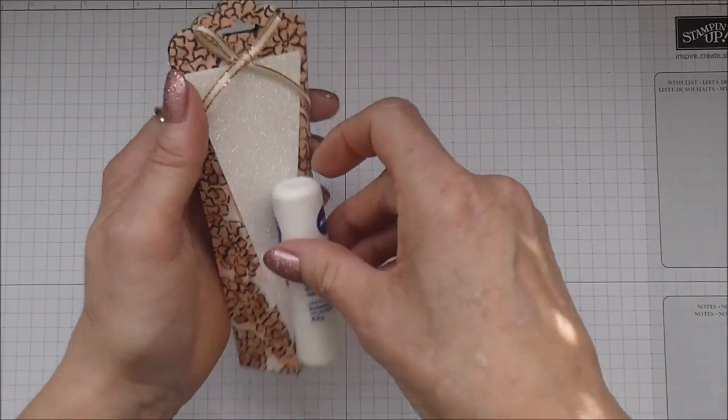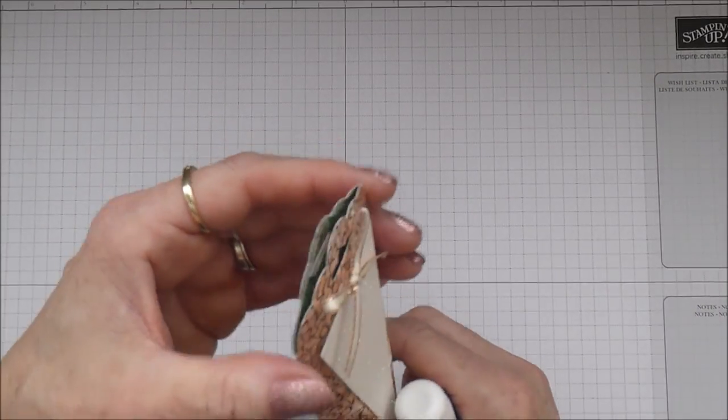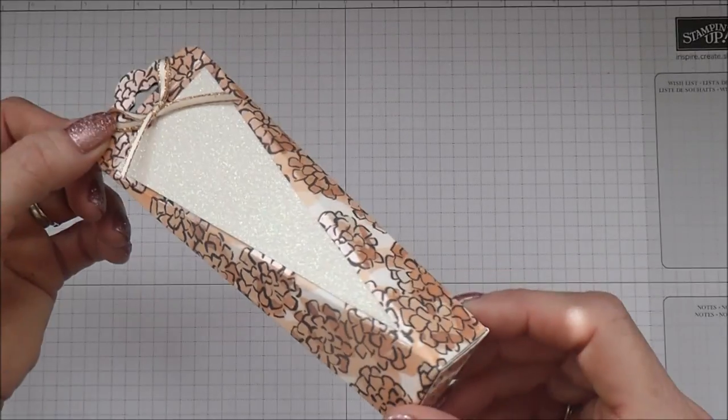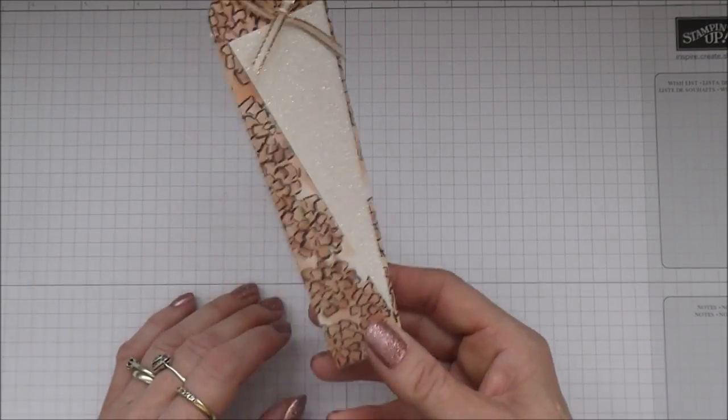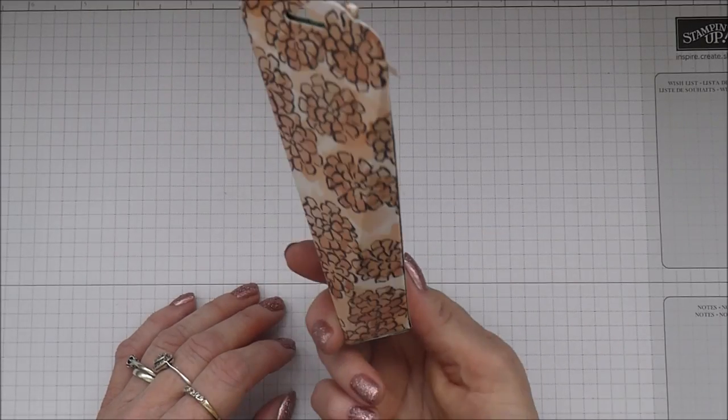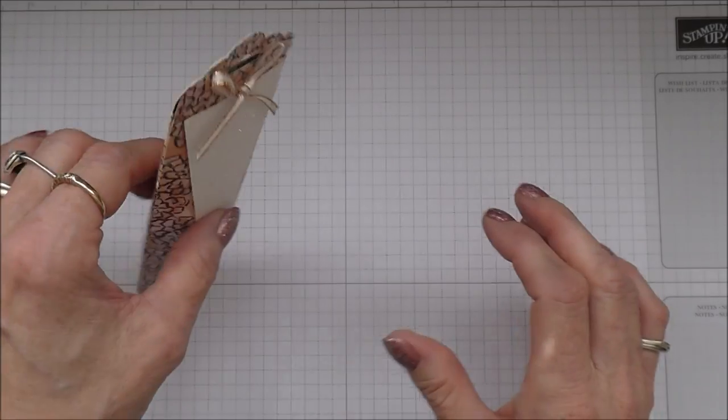So in here I have got a lip balm just to show you. So you can really make a small gift look quite special by boxing them up in something a little like this. And also they're not going to know what's inside when they look at the shape of that are they? So it's going to be a nice little surprise.